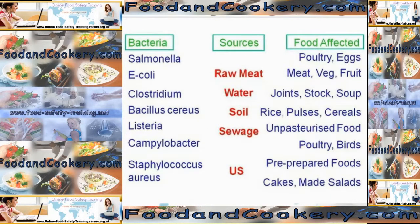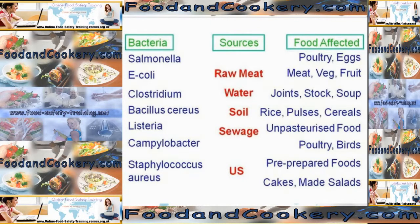Clostridium we tend to associate with large joints of meat, large pots of stock, soup or gravy. For Bacillus cereus, the main one to remember is rice, but it can also infect some pulses and cereals. Listeria we tend to find in unpasteurised foods such as pâtés, cheeses and milks.